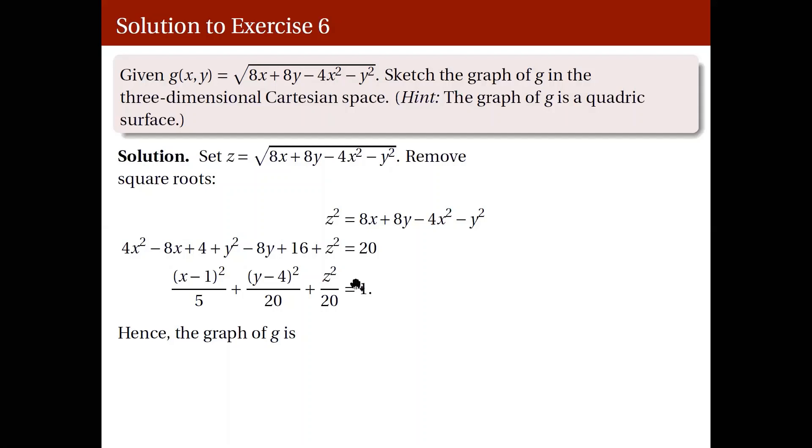Because remember, your z here is a positive or principal square root. So we will have to restrict your quadric here. In particular, we will be taking the portion of the ellipsoid where z is 0 or positive. So in particular, we will be taking the upper half of this ellipsoid centered at (1, 4, 0).